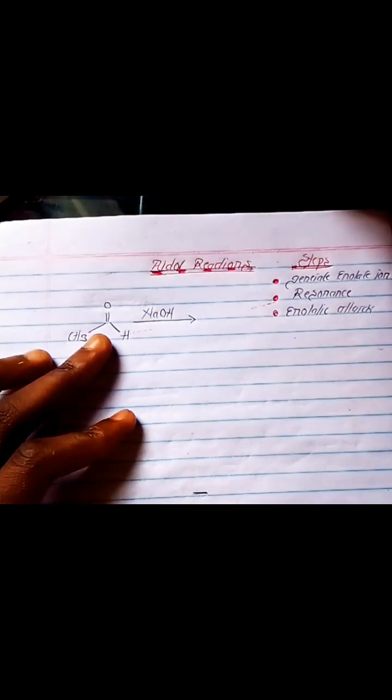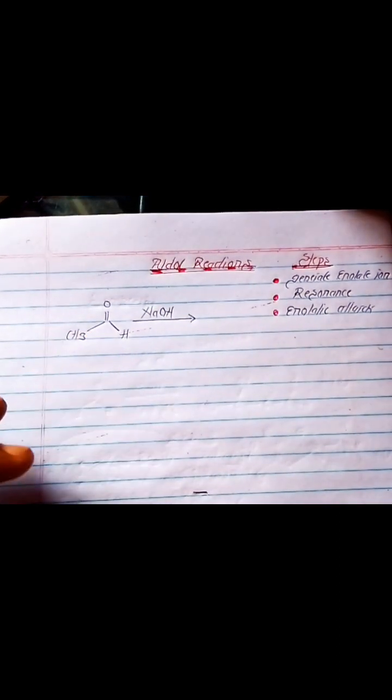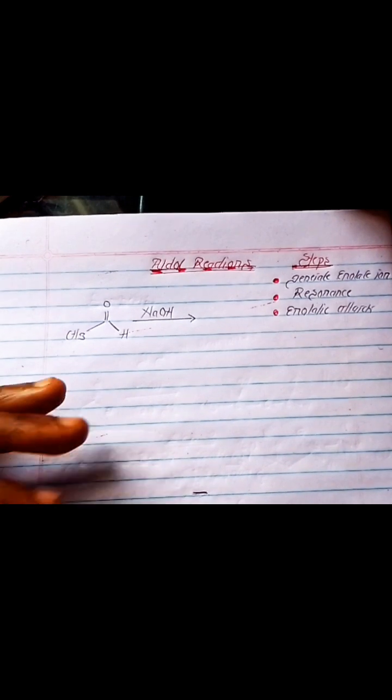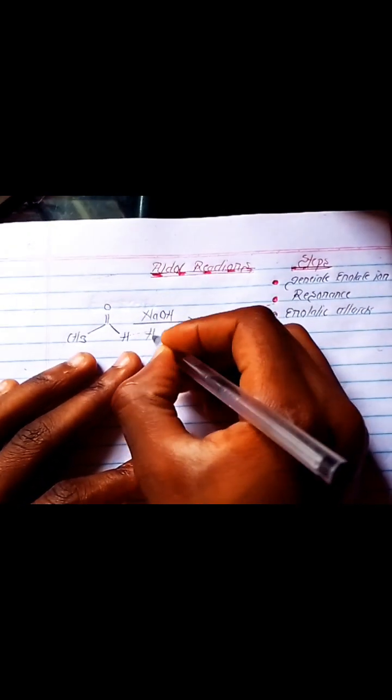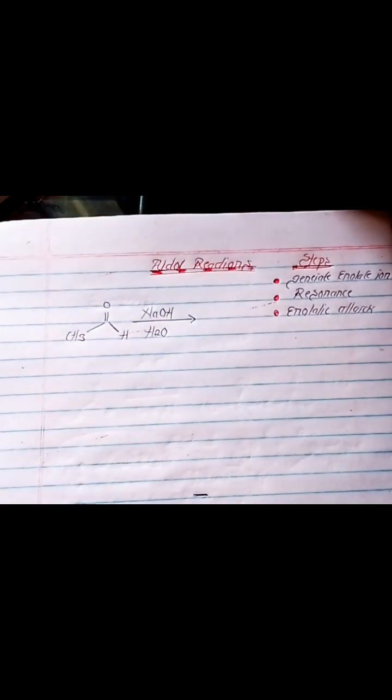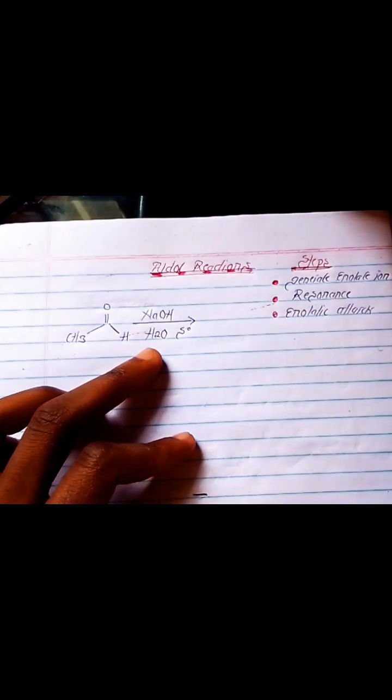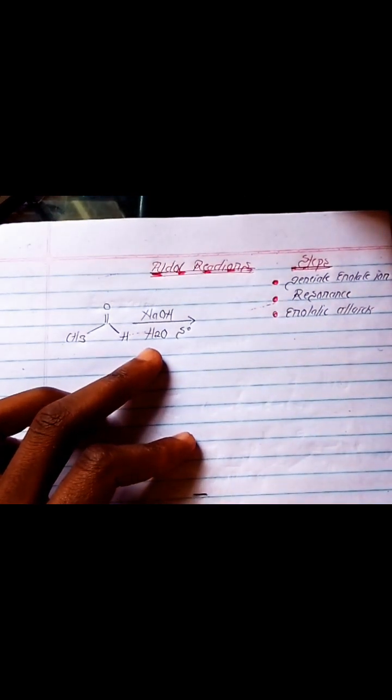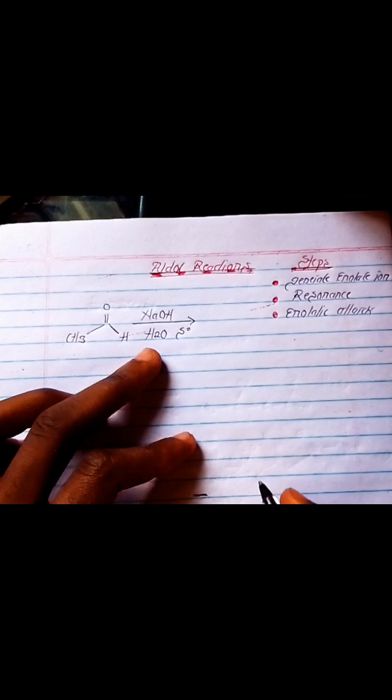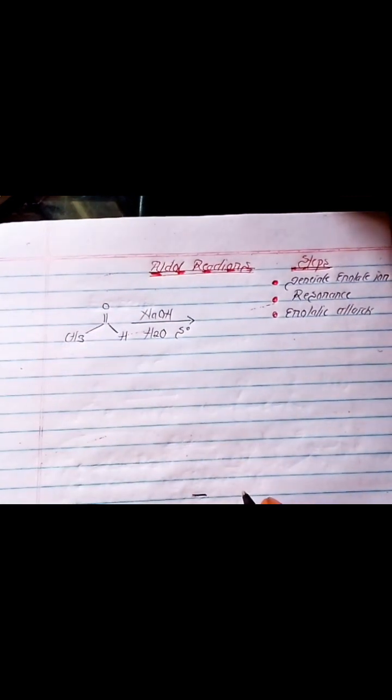It should be dilute. So some books will say 15%, some books will say 10%. Doesn't really matter at the end of the day. And you need a little bit of water because it's dilute. That means the other portion is sodium hydroxide. The other portion is water. So the temperature is usually low. Kept at around 5 to 8 degrees. So what happens when you react these things?